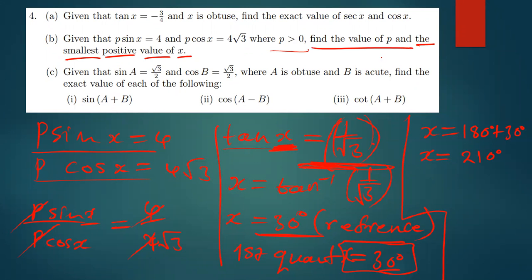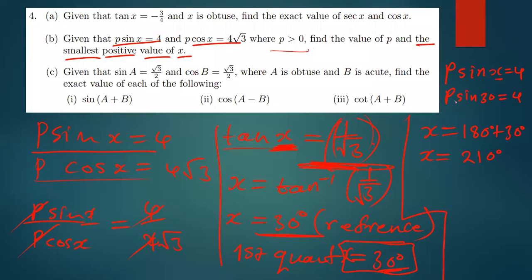To find P, substitute x equals 30 degrees into P sin x equals 4. We get P sin 30 equals 4. Since sin 30 equals 0.5, that's P times 1/2 equals 4. Cross-multiplying gives P equals 8.